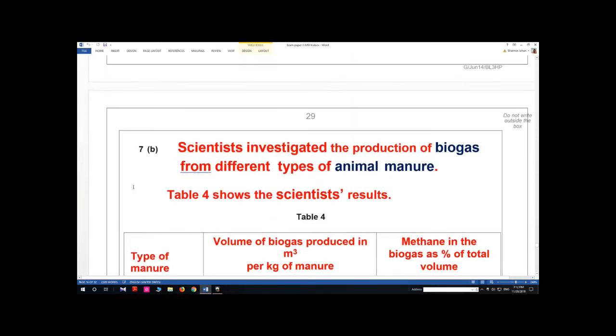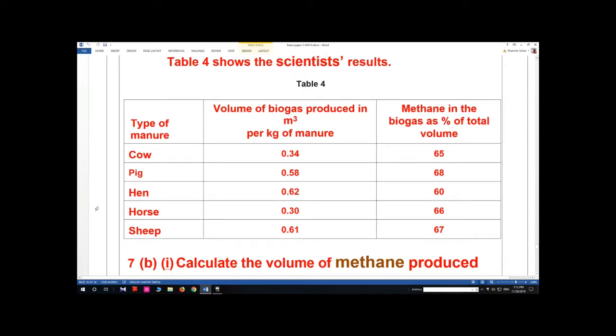Scientists investigated the production of biogas from different types of animal manure. Table 4 shows the scientists' results: volume of biogas produced per kilogram of manure for cow, pig, hen, horse, and sheep.